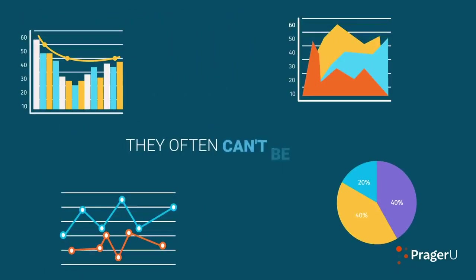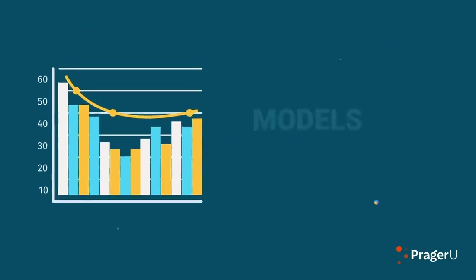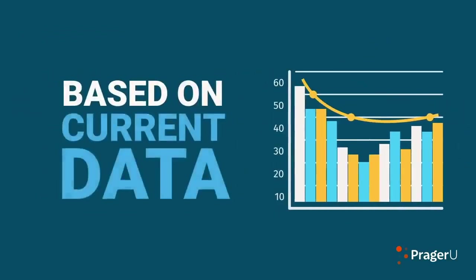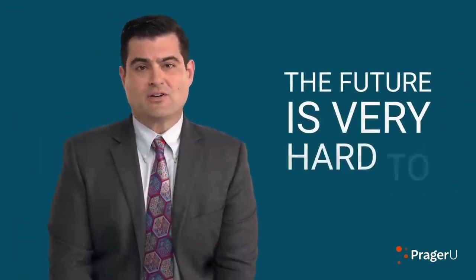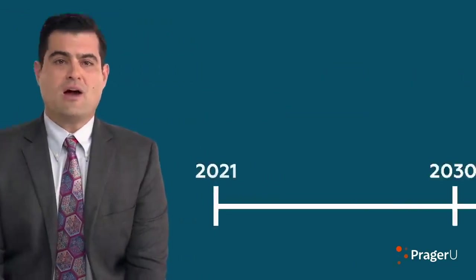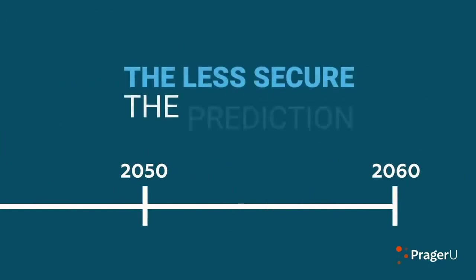This is just one reason why we have to be very careful about putting too much faith in models. They often can't be tested. Models are predictions of the future based on current data. They can easily get things wrong. First of all, the future, in case you hadn't noticed, is very hard to predict. And the further out you go into the future, the less secure the prediction.